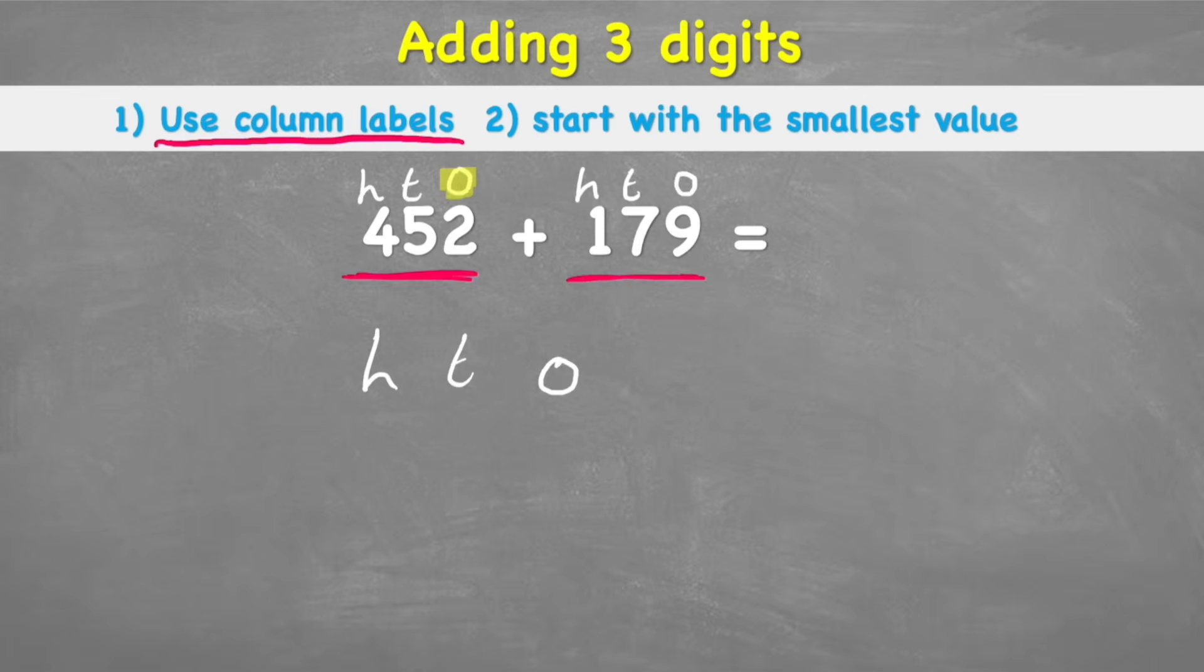So let's say I'm starting with my ones. I can clearly see I have a two in the first number and a nine in the second number. So let's put those in place. Two on the top, nine on the bottom. Now I can do my tens and I can see I have a five and a seven. Let's put those in place. Five and seven. And last but not least, let's do our hundreds. And I can see I have a four and a one. Let's put them in the hundreds column. Four and one.